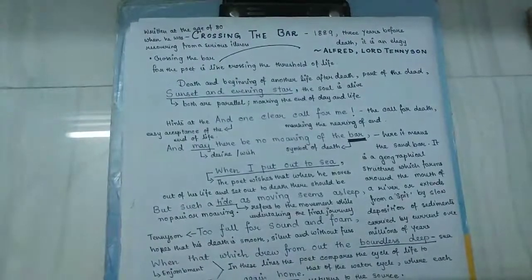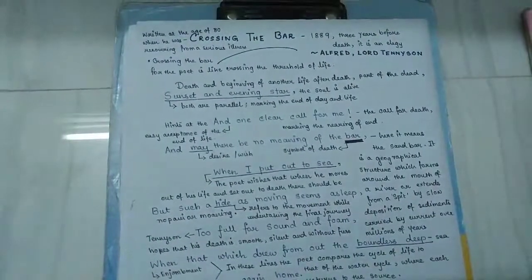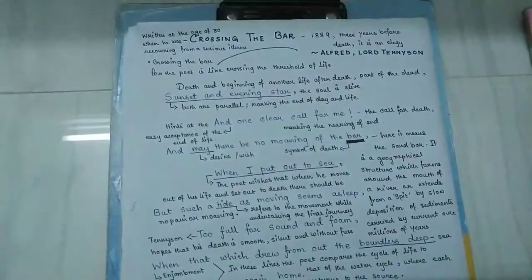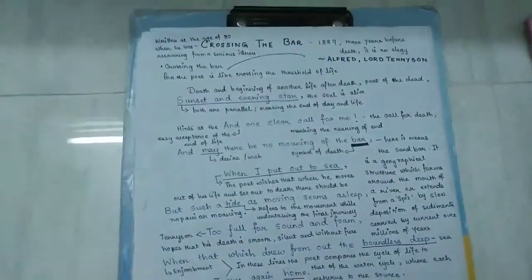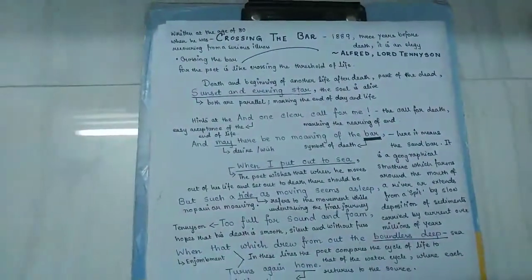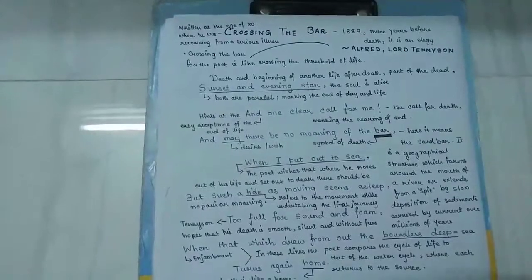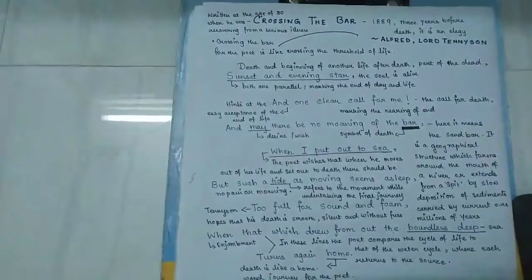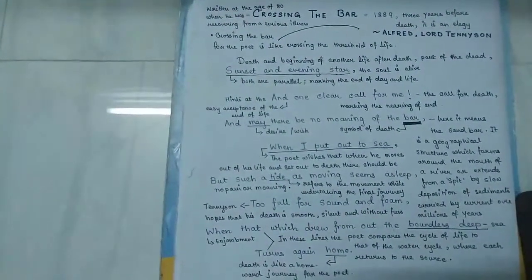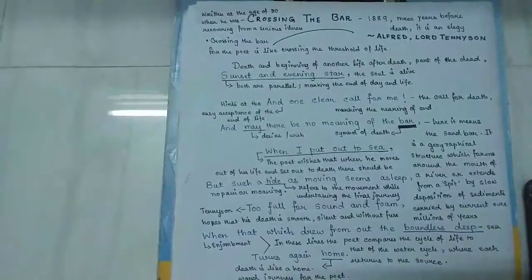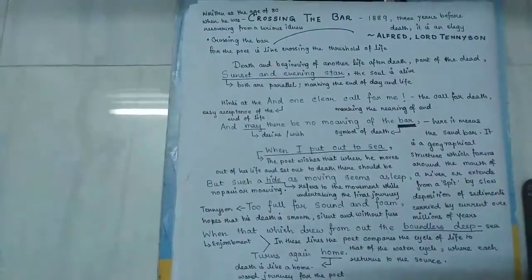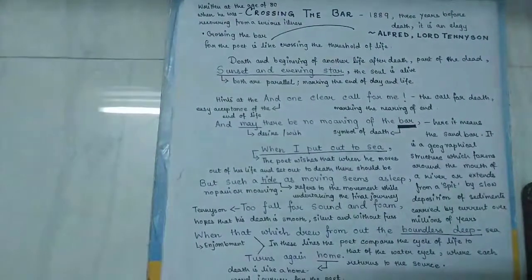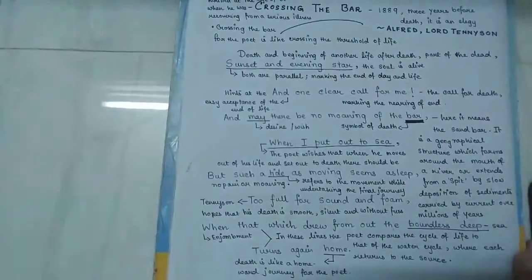This poem was written at a time when he was recovering from a serious illness at the age of eighty. An interesting fact is that it was written not only when there was a crisis in the Victorian period, but also exactly three years before his death.